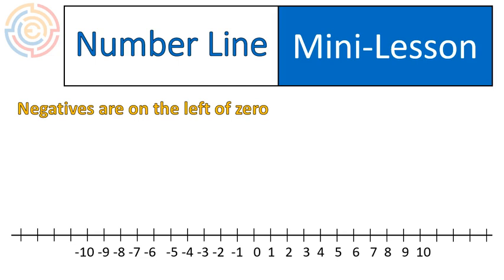Negative numbers are on the left of 0, so if I have the number negative 6, I would start at 0 again and move 6 places to the left on the number line, giving me that point right there.